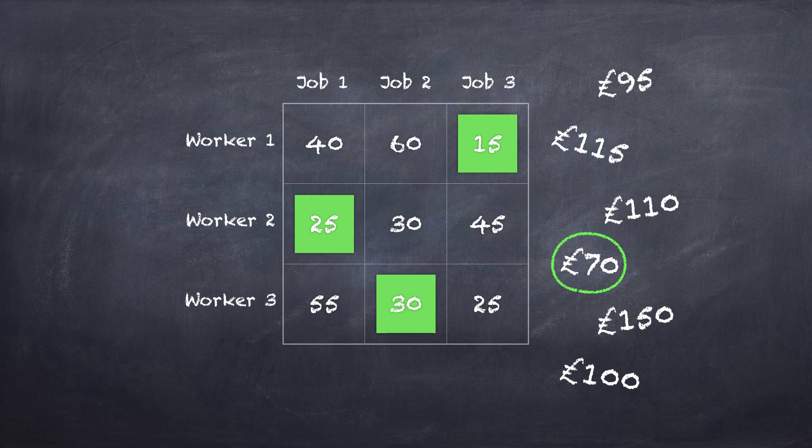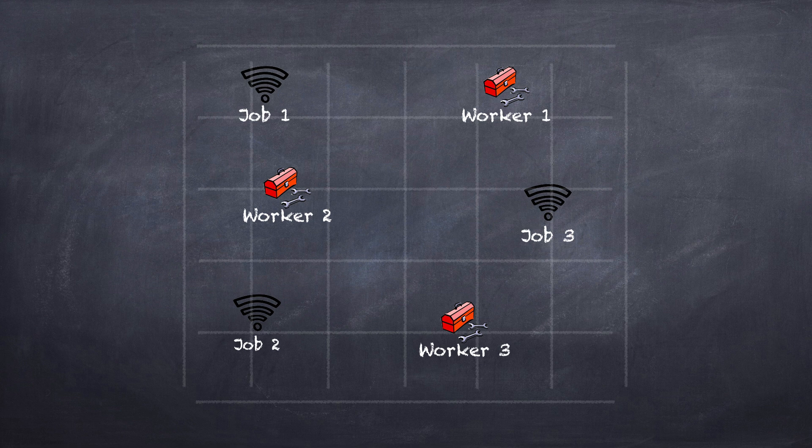We can see for this problem it is £70, giving us an assignment of worker one to job three, worker two to job one, and worker three to job two. Great, we have solved our problem.